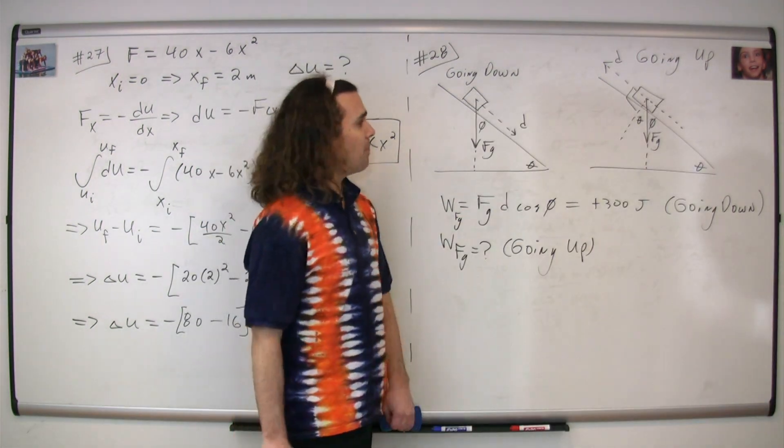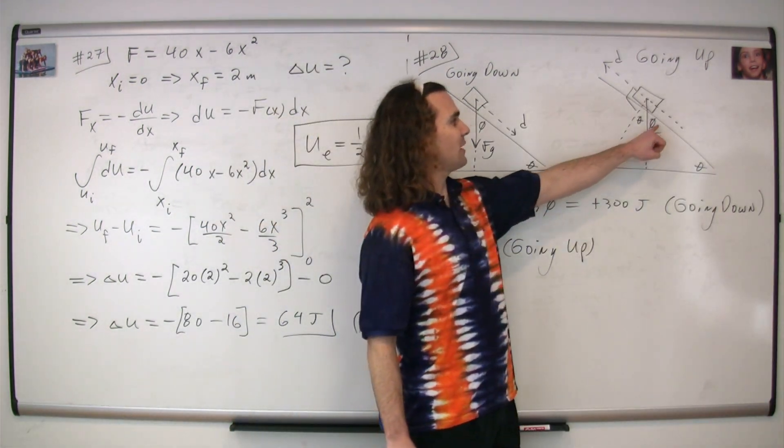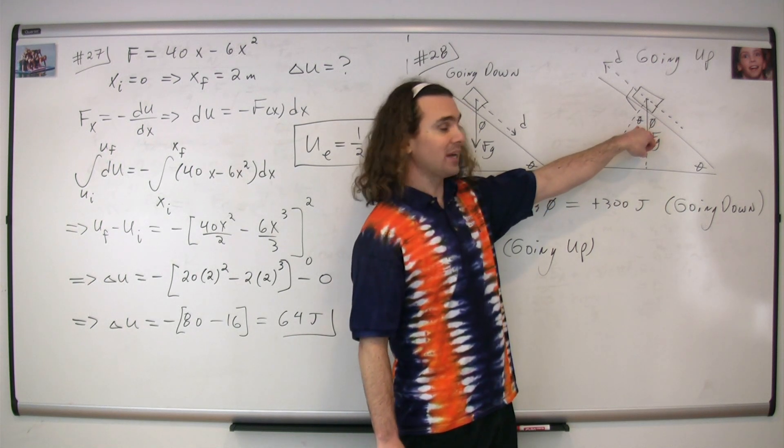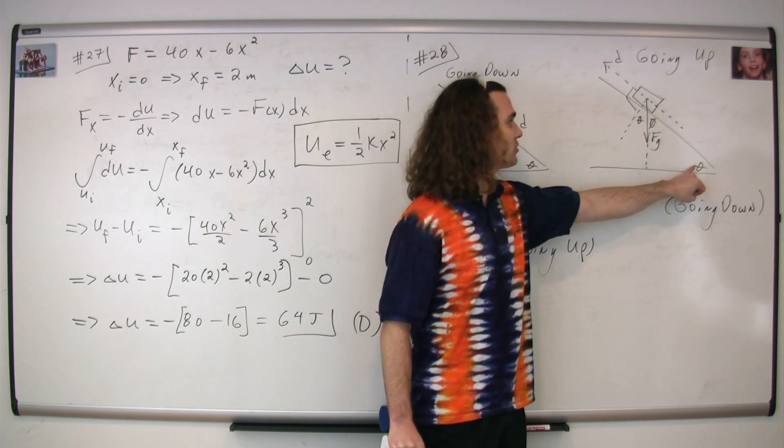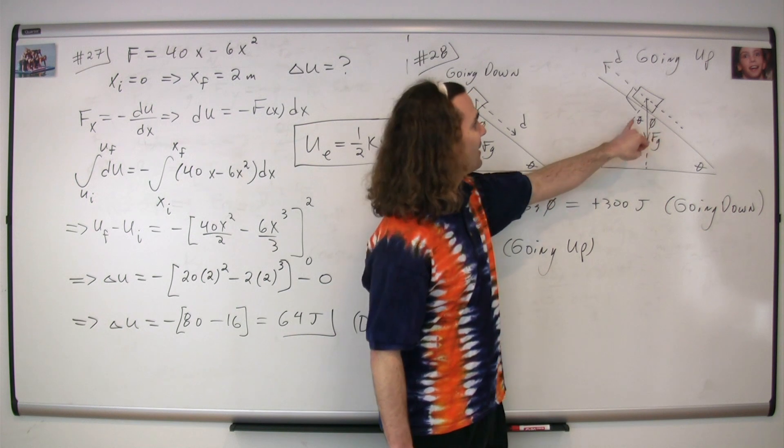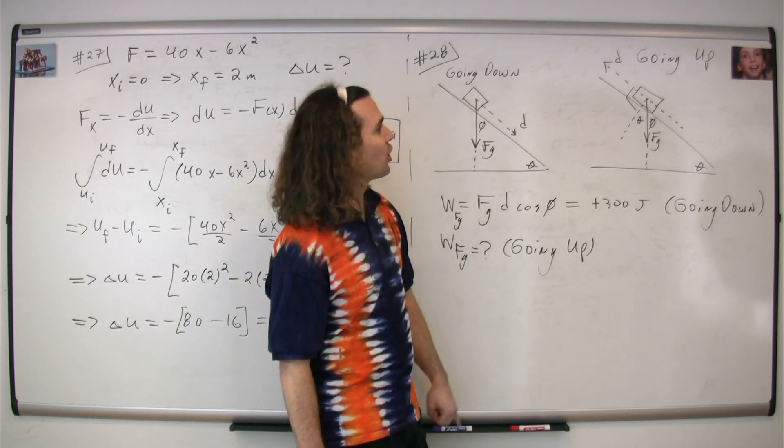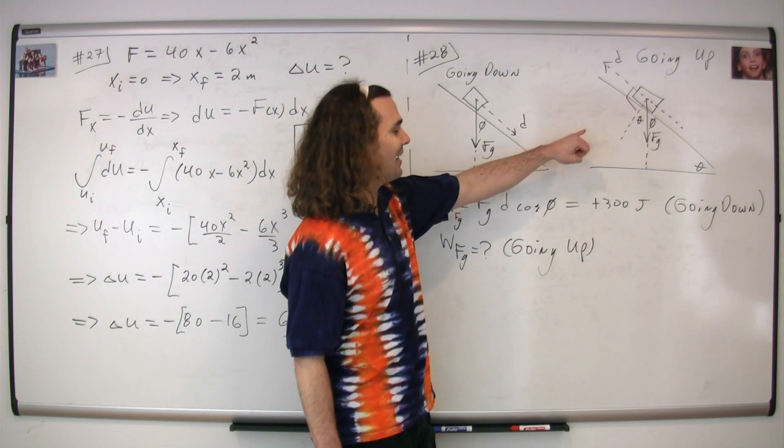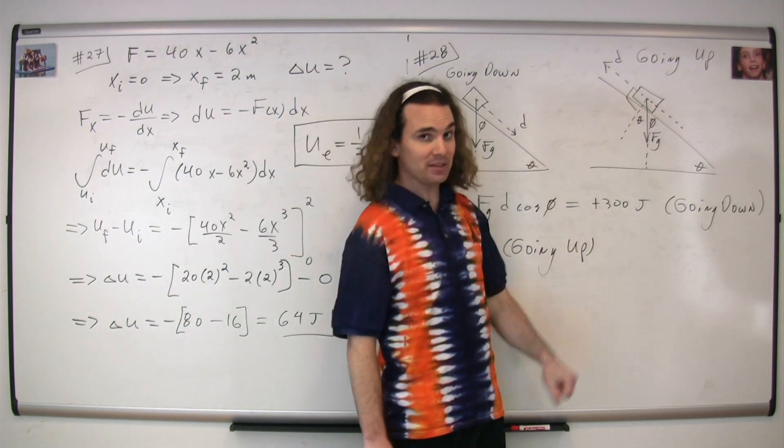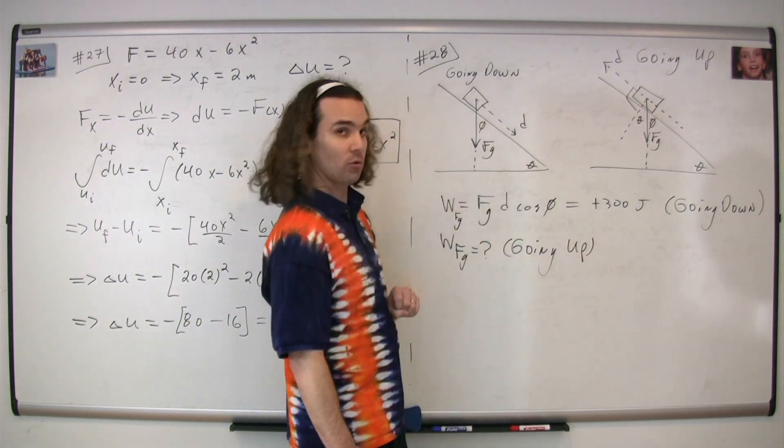Going up the incline, you should be able to identify that this angle right here is actually also theta, and that this is a 90 degree angle right here. Therefore, going up the incline, the angle is actually 90 plus theta in our work equation.